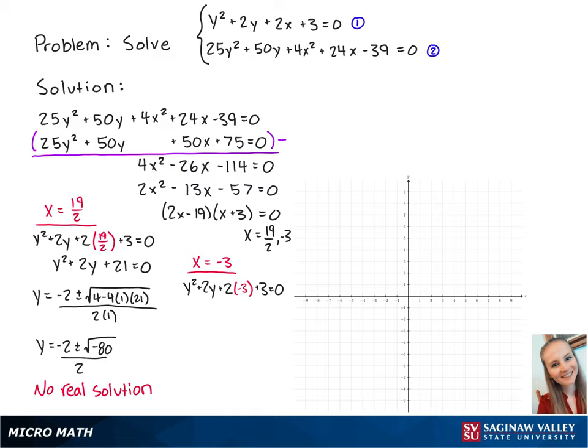For x = -3, we can factor the left side to be (y + 3)(y - 1) = 0. Here we can see that y = -3 or 1.